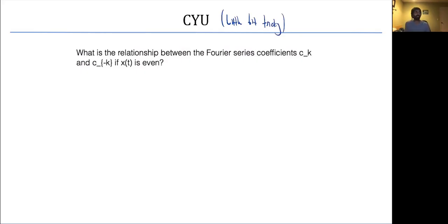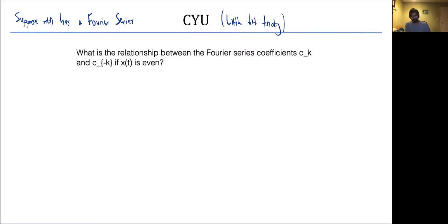Check your understanding: suppose x(t) has a Fourier series. What is the relationship between the Fourier coefficients Cₖ and C₋ₖ if x is an even signal? Pause and try this before continuing.